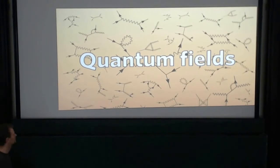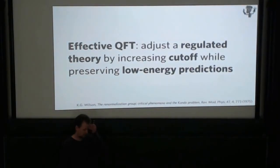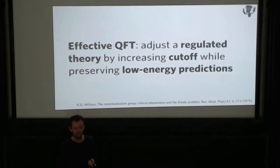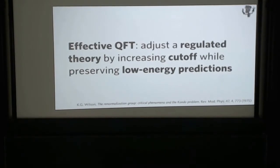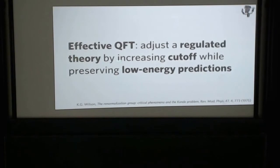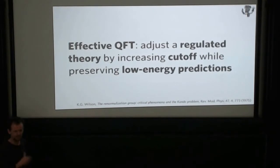When I say quantum field, I'm going to adopt a formulation predominant amongst physicists today. If you ask a practicing physicist, they would say quantum field theory is effective — we don't think of it usually as a fundamental theory anymore, particularly in many-body theory. We tend to think of it as an effective theory: something you get by adjusting a regulated theory, increasing a thing called a cutoff while preserving things called low-energy predictions. I'm going to explain all this terminology. For the moment, this is the high-level view — you're not meant to understand what I'm saying. Just let it wash over.